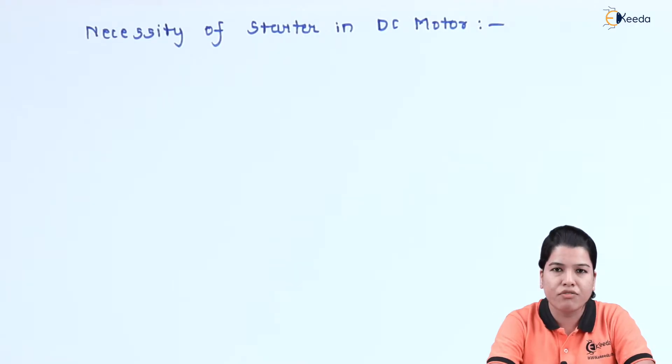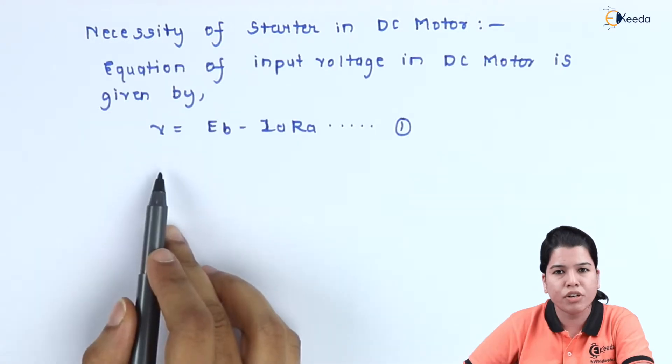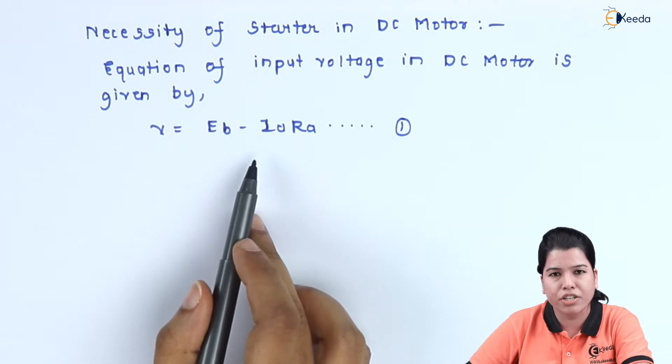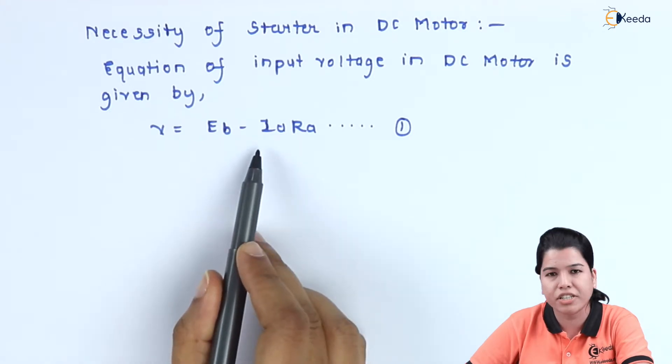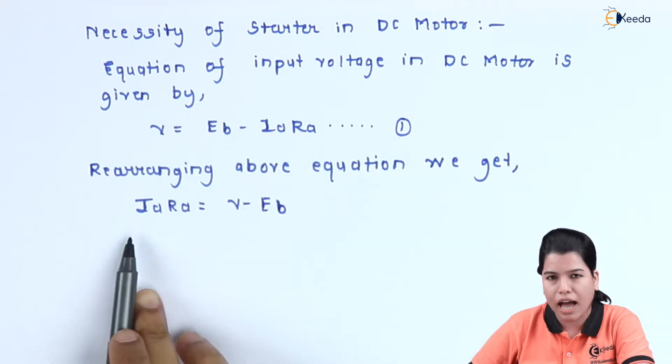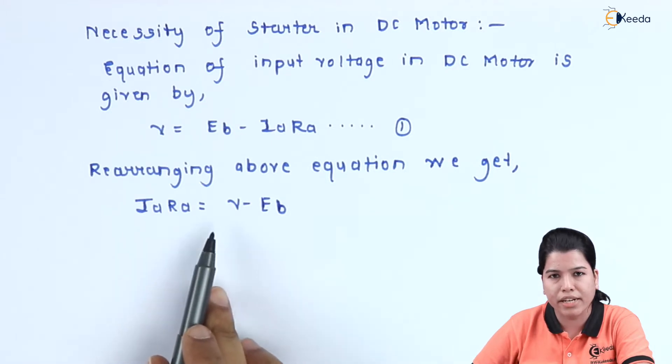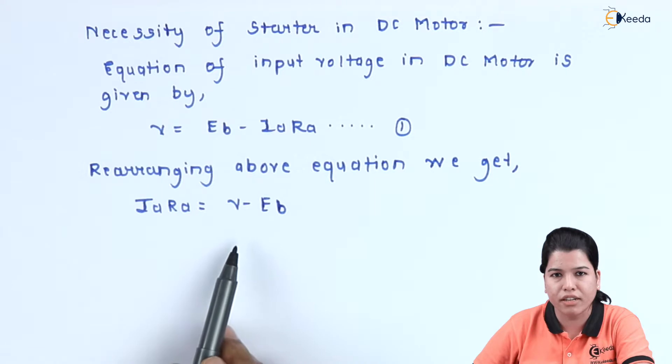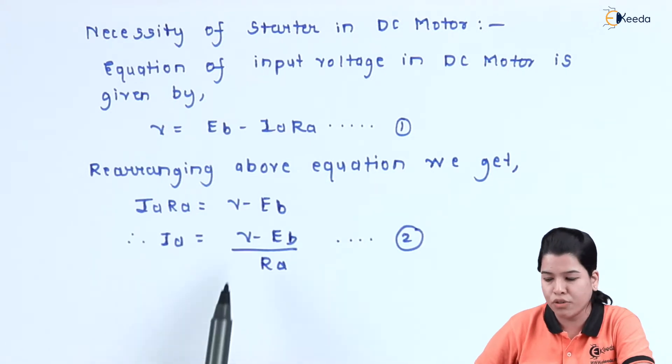We know that the equation for the voltage of the DC motor is given by V is equal to Eb minus Ia Ra. If we rearrange the equation to find the value of armature current Ia, we get Ia Ra is equal to V minus Eb. If we take this Ra on this side of equation, we get Ia is equal to V minus Eb divided by Ra.